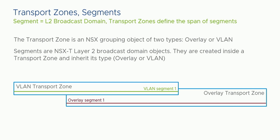Segments in NSX represent a virtual layer-2 domain. It's not exactly equivalent to a DVS port group, but it's pretty close. For example, a VLAN segment is similar to what you'd create in Cisco VTP — a VLAN with a name. An overlay segment is equivalent, but overlay-backed instead of VLAN-backed.